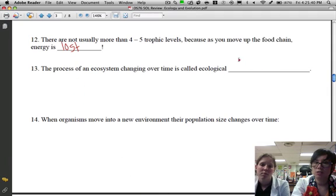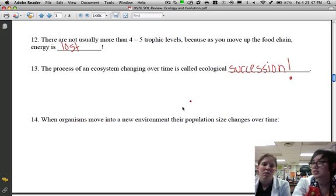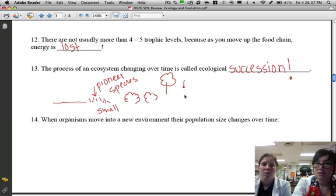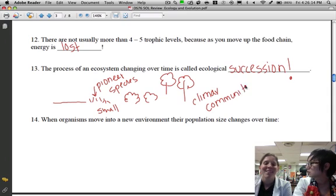Thirteen: the process of an ecosystem changing over time is called ecological succession. The best thing that you can think of when you think about this: think about things getting larger. Starting out with nothing or very small things, and then over time you get maybe some small plants. We have our pioneer species, which is our first living thing. And then the very end on the opposite side, which is our largest things, which would be a forest potentially, would be our climax community.